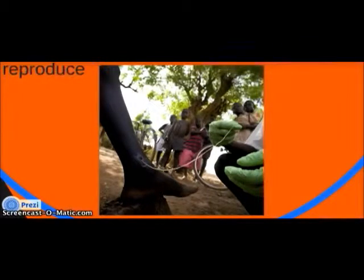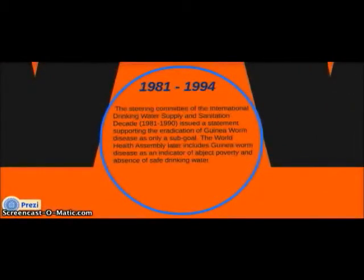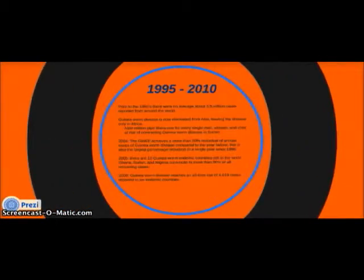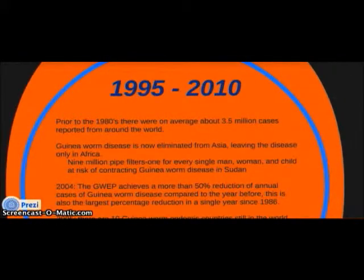From 1981 to 1994, the steering committee of the International Drinking Water Supply and Sanitation Decade issued a statement supporting eradication of guinea worm disease as only a sub-goal. The World Health Assembly then voiced support for eradication and classified guinea worm disease as an indicator of abject poverty and absence of safe, clean water.